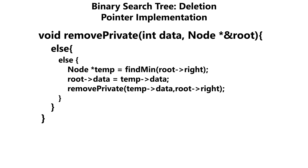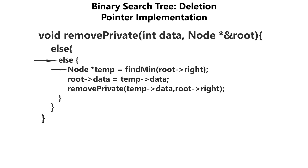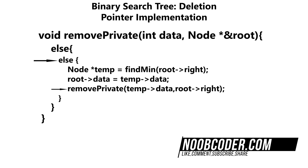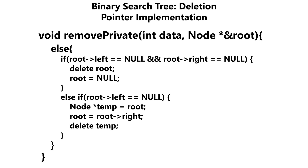Moving on, if we reach this else statement, that means our node has two children. The way I'm going to go about deleting a node with two children is by finding the minimum data within our right subtree. Looking at our find minimum method, we get passed in the right child and use a while loop to keep going left until we hit null. Once we hit null, we've found the minimum value within our right subtree. We then replace the data of the node we're deleting with that minimum value, and recursively call our remove private method to go down the right subtree and remove the duplicate — which will go through the three conditional statements and eventually get deleted.